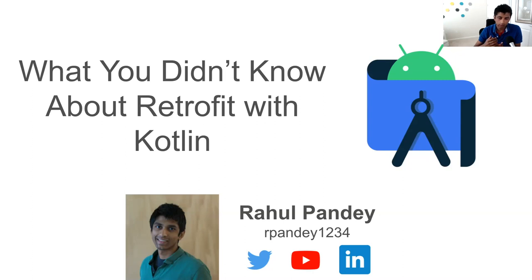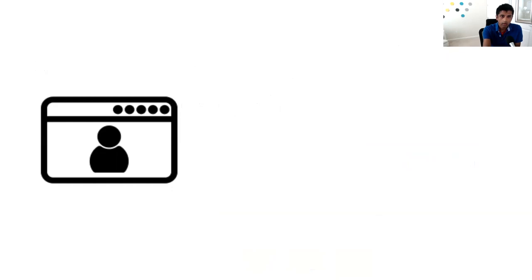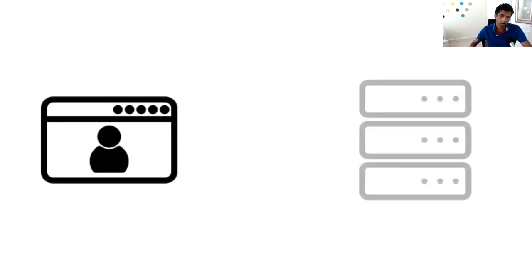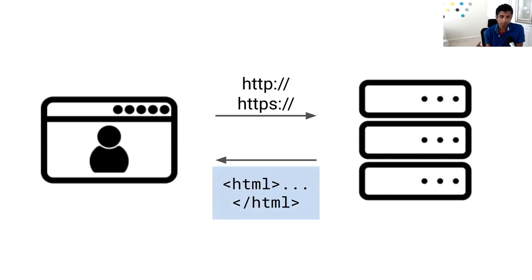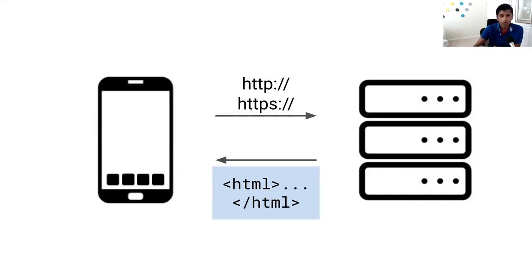Taking a step back — most people who do Android are probably aware that Retrofit is a popular way to do networking, but what does it actually mean? If you think about your browser — Chrome or Firefox — that's essentially a client, and you're going to talk to some server through HTTP or HTTPS. These are application-level protocols which allow you to request data from a server. Historically the server would send back a web page — HTML — which describes the data to render along with the markup.